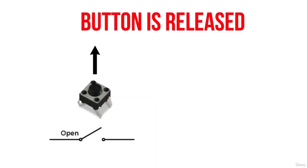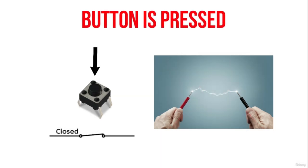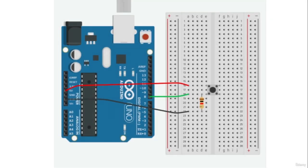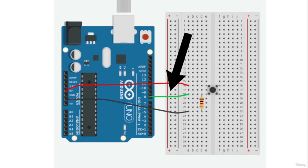In this circuit, one pin of the button is connected directly to the 5V pin of the Arduino using a red jumper wire. The other is connected to one end of the resistor. A black wire connects the other end of the resistor to the ground pin of the Arduino, which corresponds to 0V. To read the state of this button, we connect a wire from digital pin number 8 to the resistor. Follow this simple wiring and let's proceed with coding.